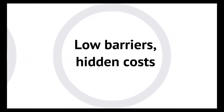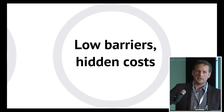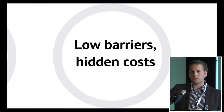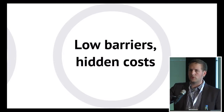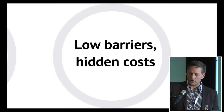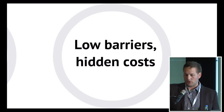We also have low barriers and hidden costs. Low barriers is again obvious if we think about Google and the big players. Since users are now the commodity — since they are the product — they try to make it as easy as possible to let users in. At the same time, they're trying to hide the costs of it — for example, that their data might be used.